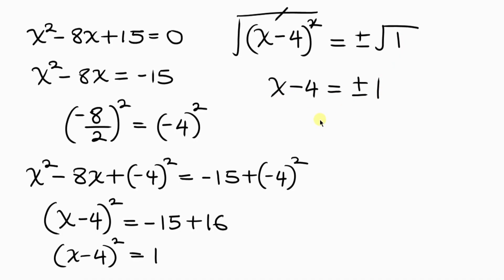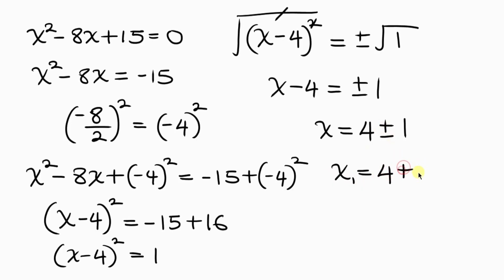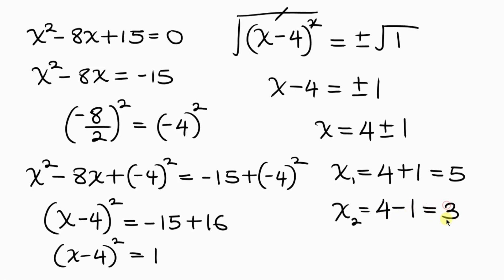To get the value of x, move negative 4 to the right — it becomes positive 4 — so x equals 4 plus or minus 1. Separating the two values: taking the plus gives x equals 4 plus 1, which is 5. Taking the minus gives x equals 4 minus 1, which is 3.